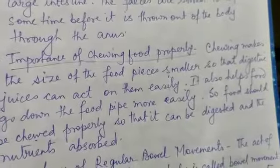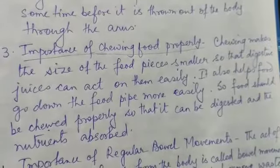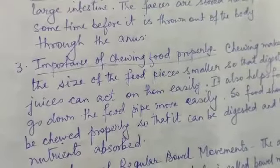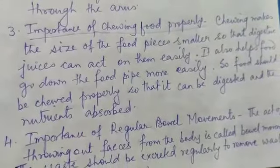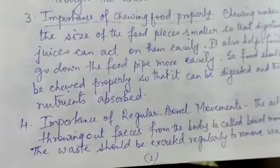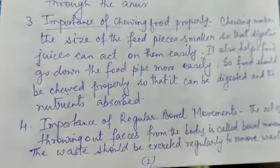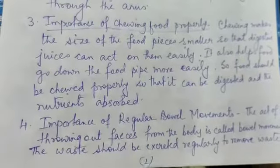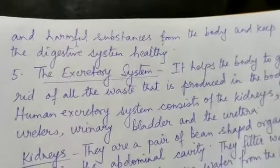Now let us learn about the importance of chewing food properly. Chewing makes the size of food pieces smaller so that digestive juices can act on them easily. It also helps food to go down the food pipe more easily, so that it can be digested and the nutrients can be absorbed. Regular bowel movements — the act of throwing out feces from the body — are important to remove waste and harmful substances from the body and keep the digestive system healthy.